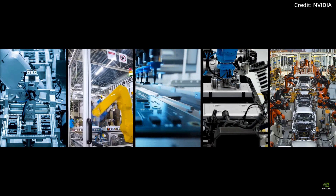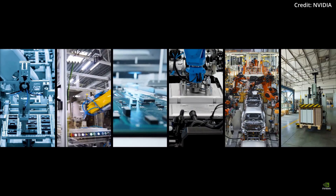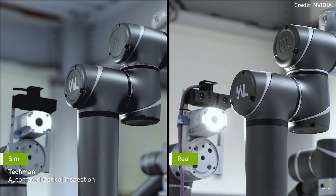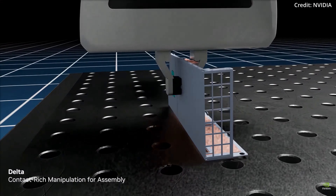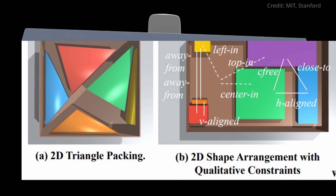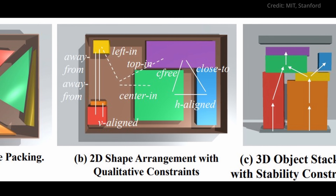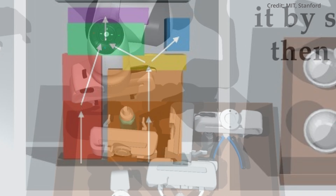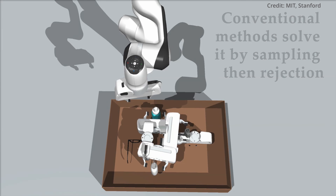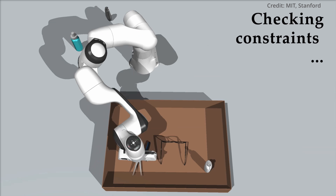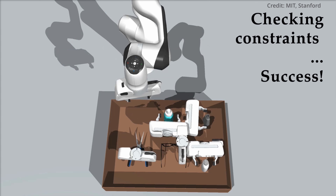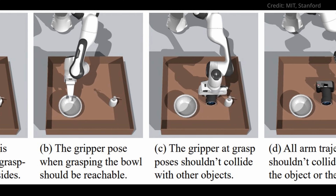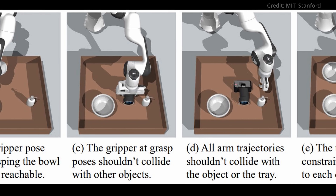Most impressive is that Diffusion CCSP's ability to generalize across different scenarios isn't just theoretical — it's been practically proven. The researchers tested the model in four demanding domains, including two-dimensional triangle packing and three-dimensional item packing by robots. Across the board, Diffusion CCSP outclassed existing methods in both speed and adaptability to new challenges. The result is a robot that can think on its feet, adjusting to a myriad of situations without skipping a beat.